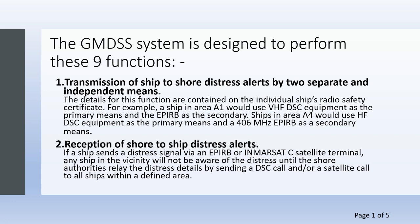Function 2: Reception of shore-to-ship distress alerts. If the ship sends a distress alert by an EPIRB or an INMARSAT-C satellite terminal, any ship in the vicinity will not be aware of the distress until the shore authorities relay the distress details by sending a DSC call and/or a satellite call to all ships within a defined area.